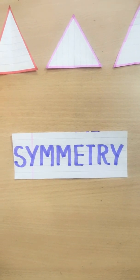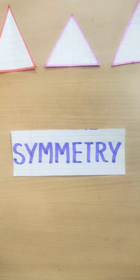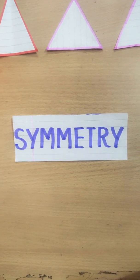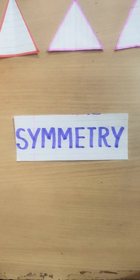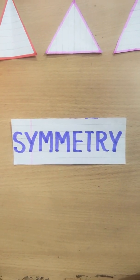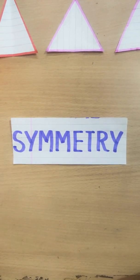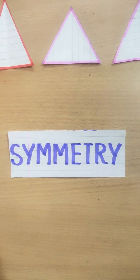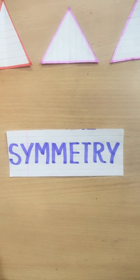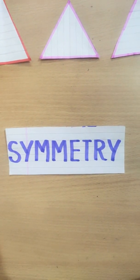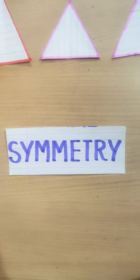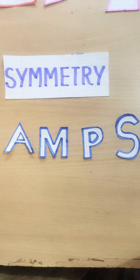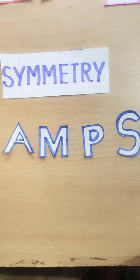Here is a question for you: what do you mean by symmetry? Do any one of you know about it? Let me help you all find the concept of symmetry. Symmetry means if we take any object and draw an imaginary line through it, one part of the object needs to be the exact copy of the other part — that is, one part must be the mirror image of the other part.